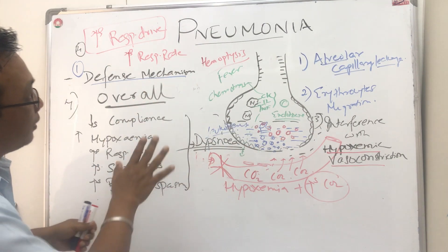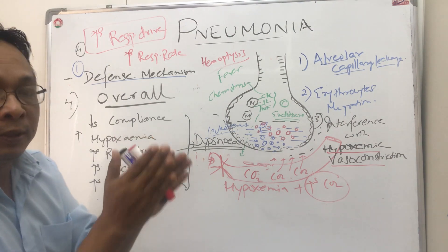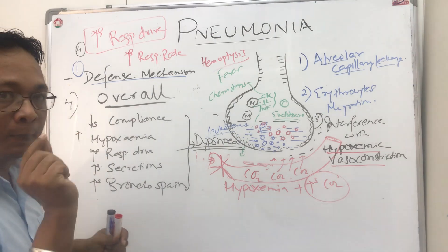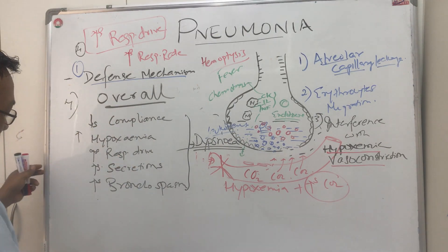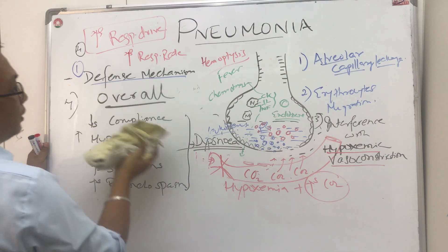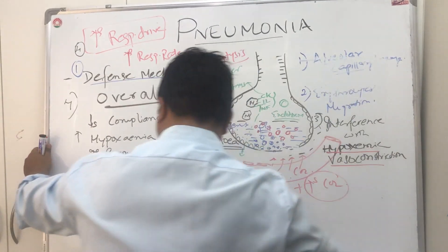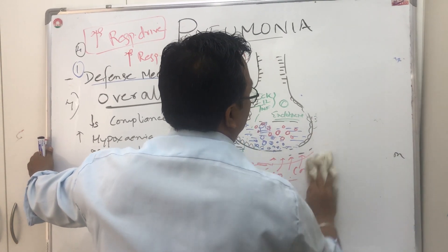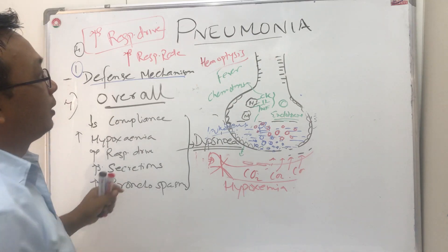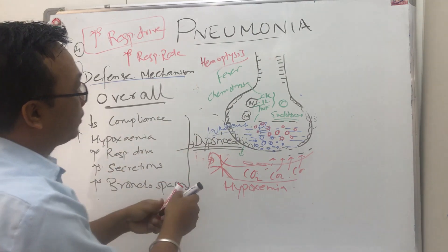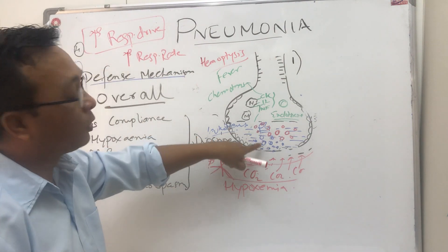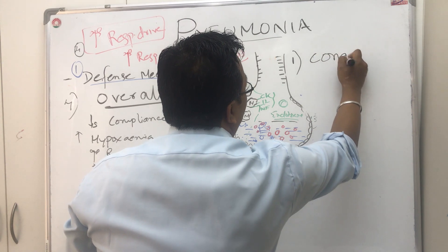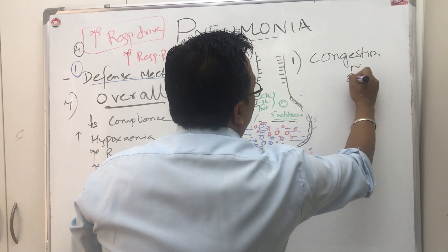Before we finish, note that pathology is different from pathophysiology. You can finish the pathophysiology section with a final heading called pathology. You can write it easily: first, because of alveolar capillary leakage, there is fluid collection — so you write congestion or edema.